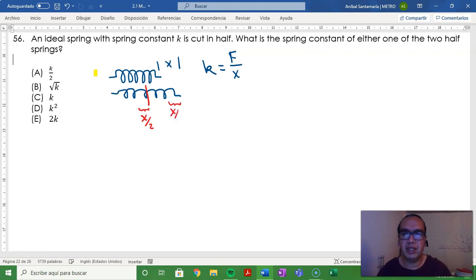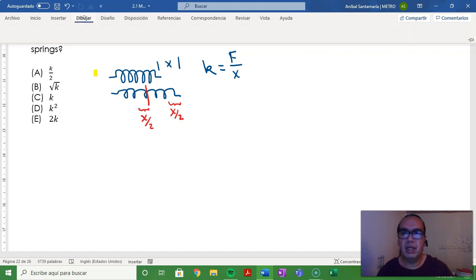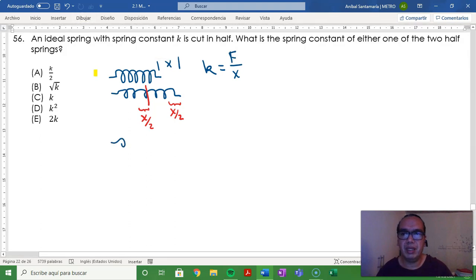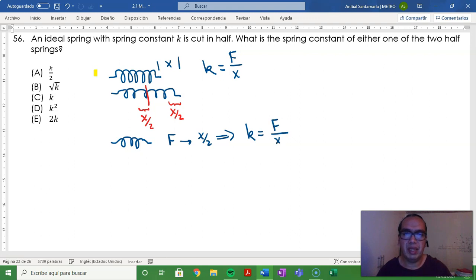Therefore, by taking only half of the spring, you will have that a force F causes a displacement x over 2, which means then that your constant will be the same force F divided by x over 2, which is twice F over x. This means then that